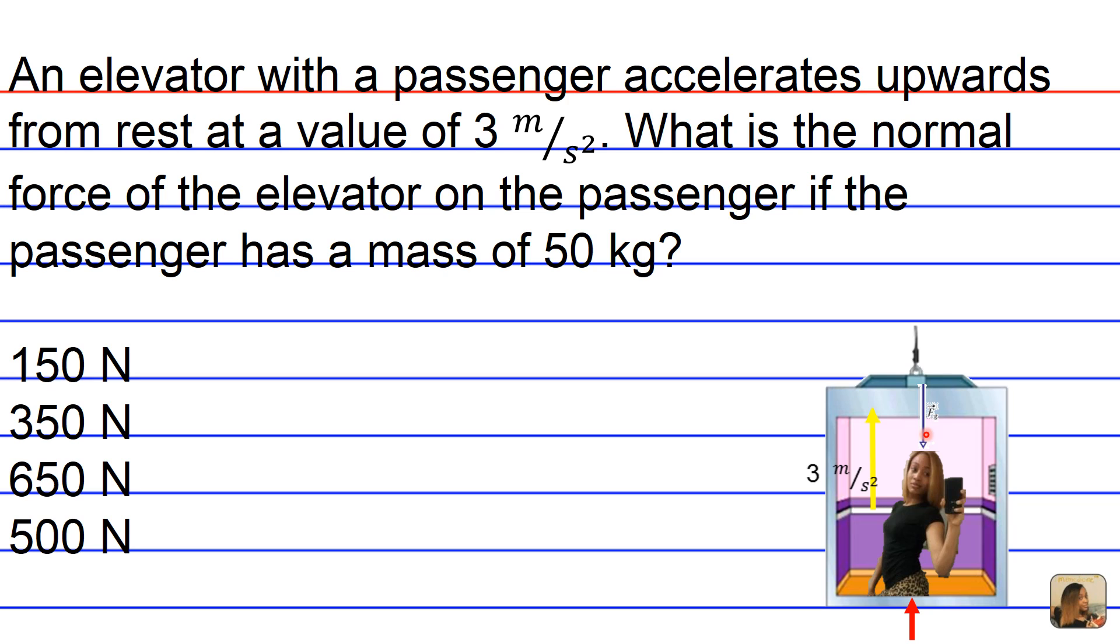But for MCAT purposes, we're going to approximate 9.8 meters per second squared at 10 meters per second squared, since we don't have a calculator handy and this makes multiplication much easier. So that's the net force. It's going to be the product of the mass times the net acceleration. So we have to include both the elevator and passenger acceleration as well as g, the acceleration due to gravity.